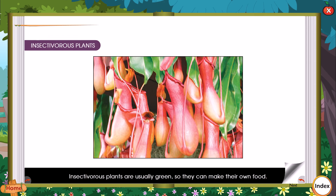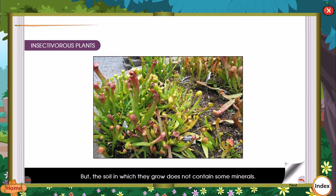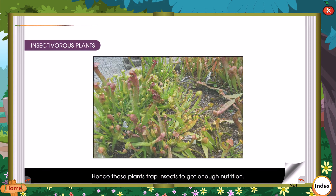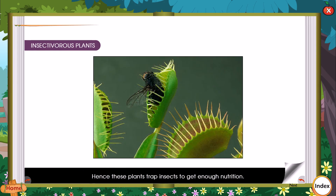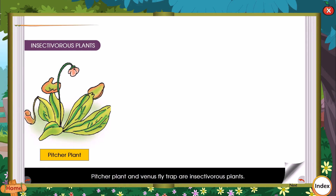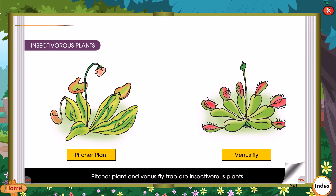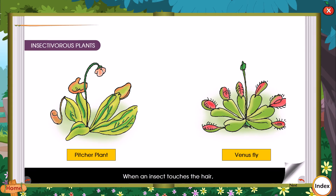Insectivorous plants are usually green, so they can make their own food. However, the soil in which they grow does not contain certain minerals. Hence, these plants trap insects to get enough nutrition. Pitcher plant and Venus flytrap are insectivorous plants. In the Venus flytrap, there are short hairs on the inside of the leaf. When an insect touches the hair, the two halves of the leaf suddenly shut in less than a second and trap the insect inside.